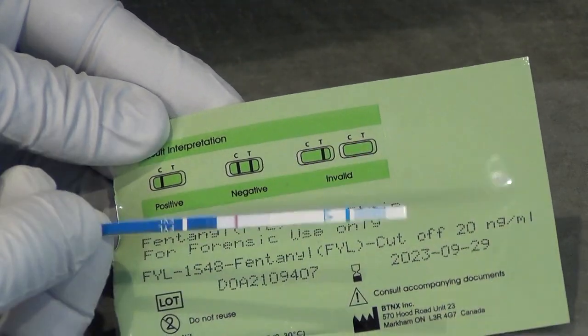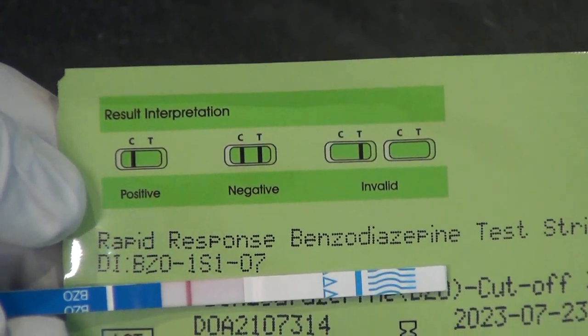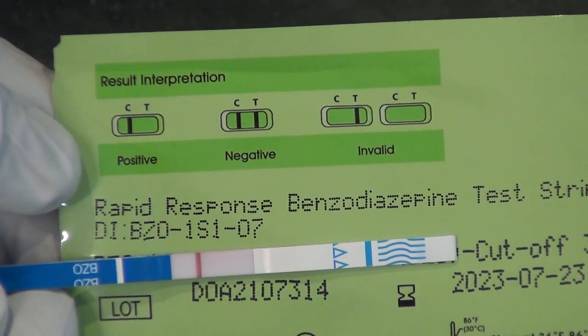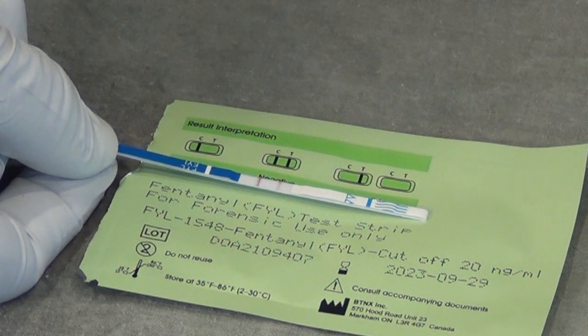If only one line is present and it is closest to the shorthand of the chemical name, the test is positive. This means the sample contains a substance for which you are testing. If there are two visible lines, the test is negative for the substance for which you are testing.